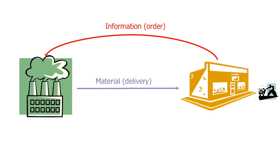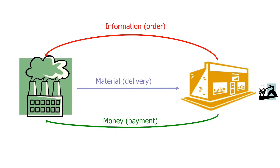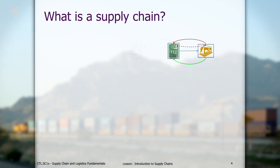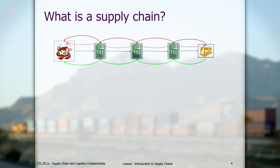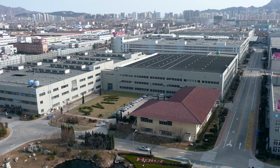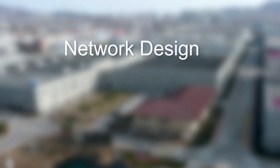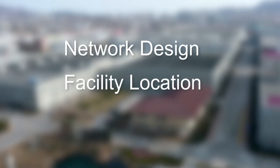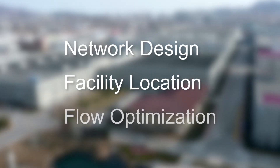On completion of the course, you will have a deep understanding of and ability to design the three flows — information, physical, and financial — that create a successful supply chain. We'll start the course by introducing the design of the physical flow of a supply chain, sometimes called network design, facility location, or flow optimization.